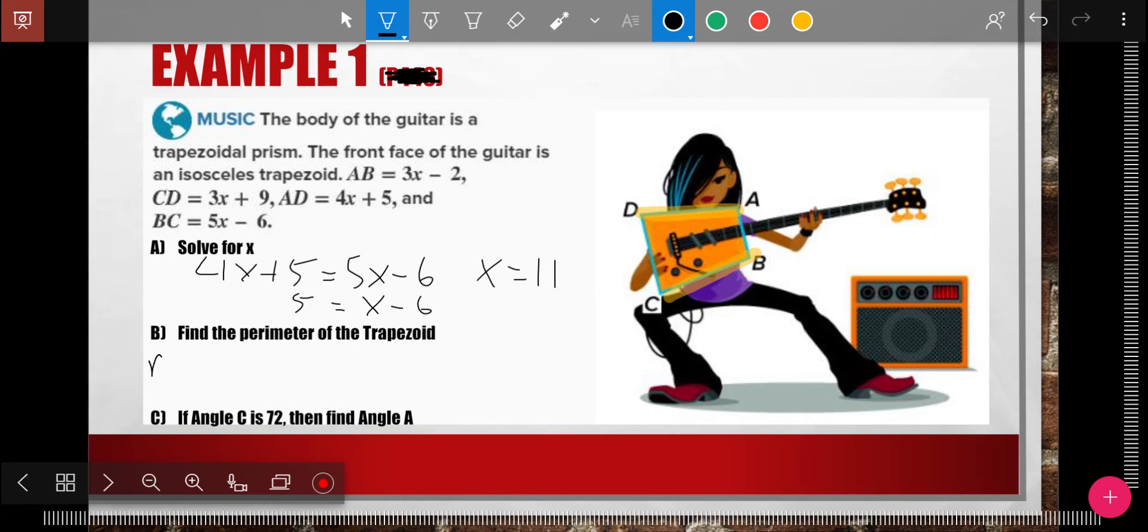And so I know AD equals 49. Which means BC, because it's the same thing as AD, also equals 49.